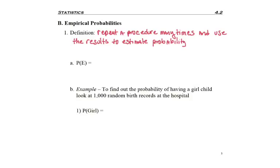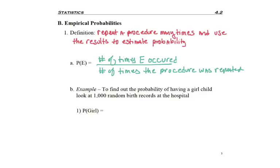To put that in a more formula-looking format, we take the number of times that E occurred divided by the number of times that the procedure was repeated.